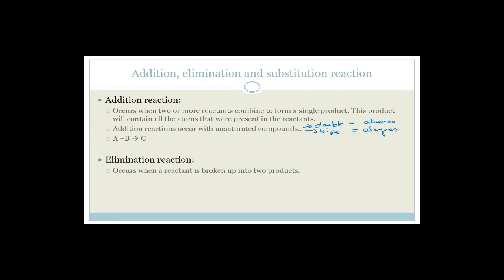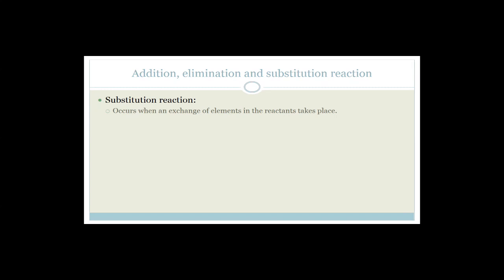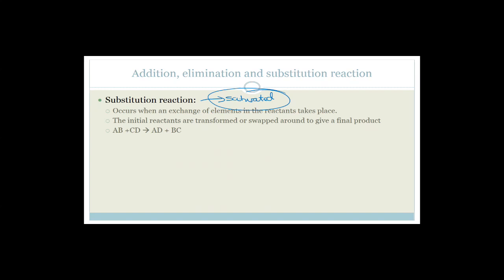An elimination reaction is the opposite: a reactant is broken up into two products, and it occurs with saturated compounds. Addition and elimination are basically opposites — you use addition to make something and elimination to break it back down. A substitution reaction occurs when there's an exchange of elements — reactants are swapped around — and this always happens with saturated compounds because they cannot add.